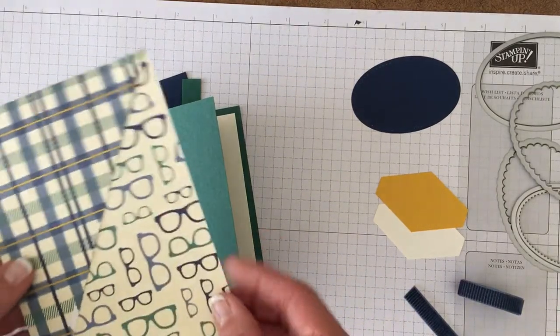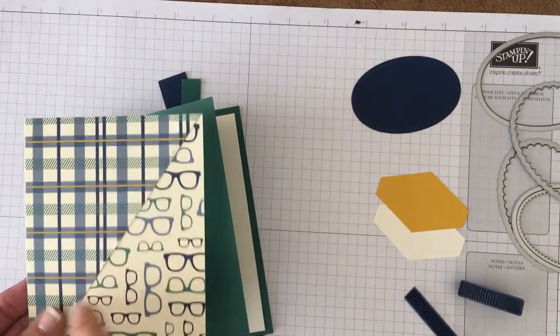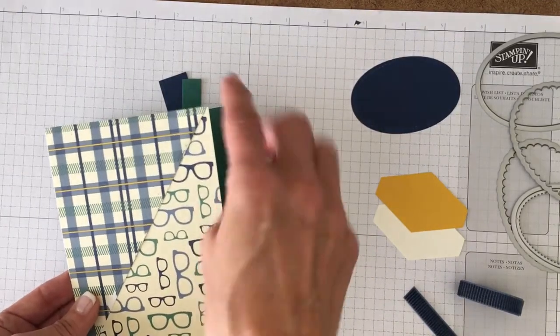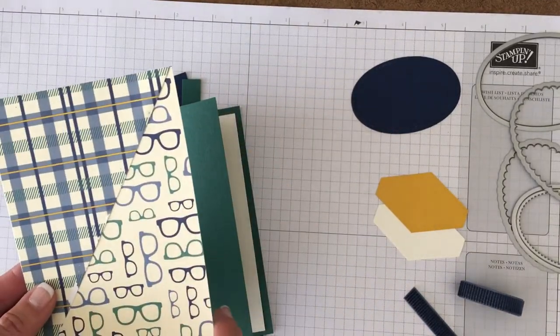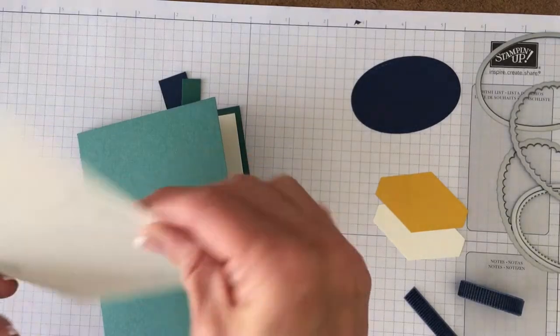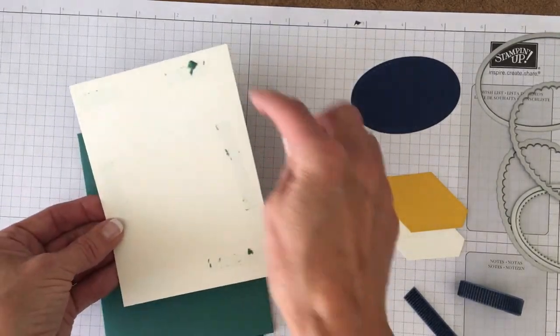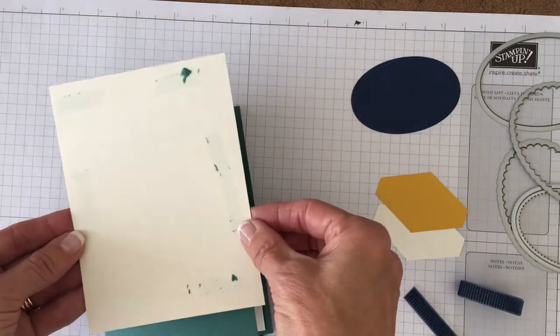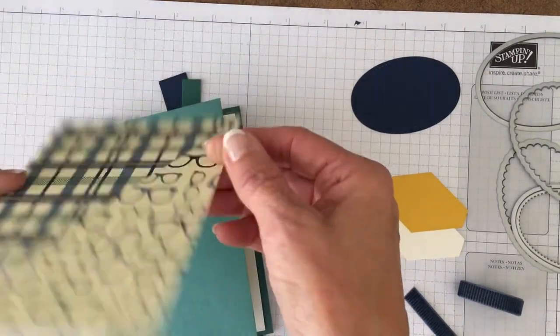So what I did is I took the two triangles. You can see I made a video that didn't turn out. So what I did is I just took the triangles and lined them up with the edges of the Very Vanilla. So you can see there's no paper showing from this side but that gives you the template of the triangles.